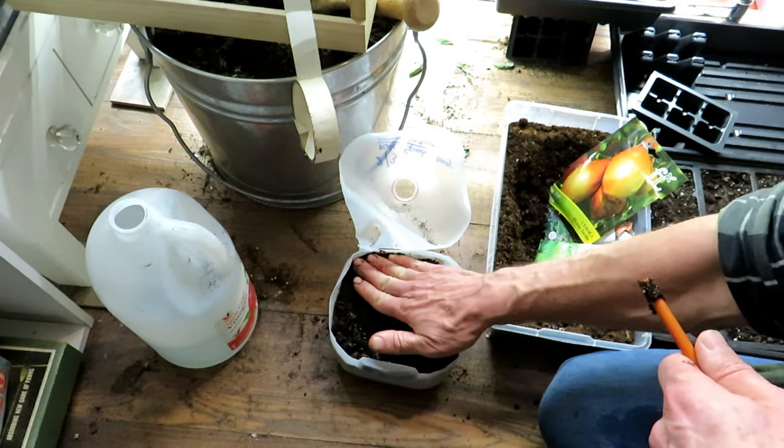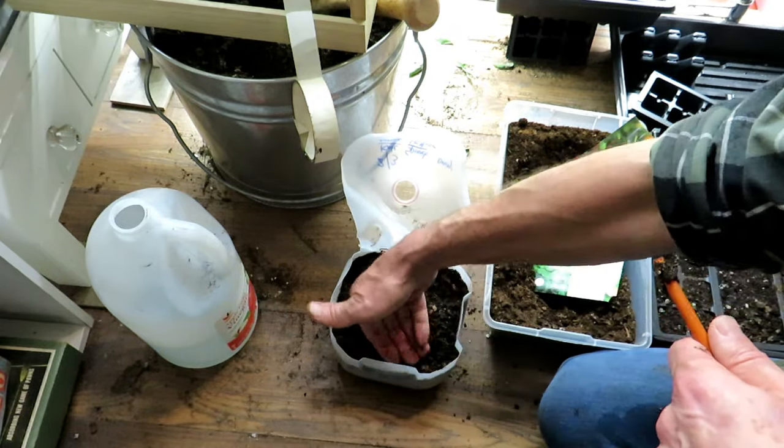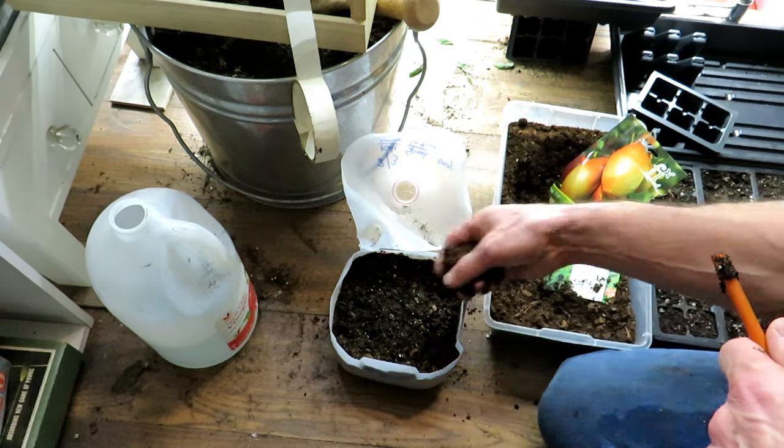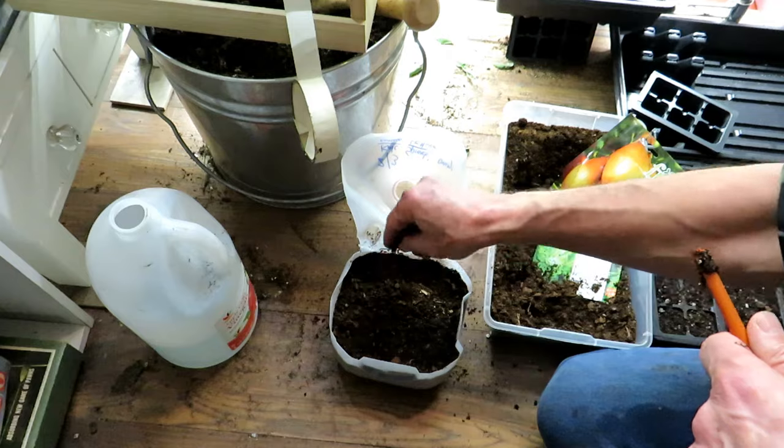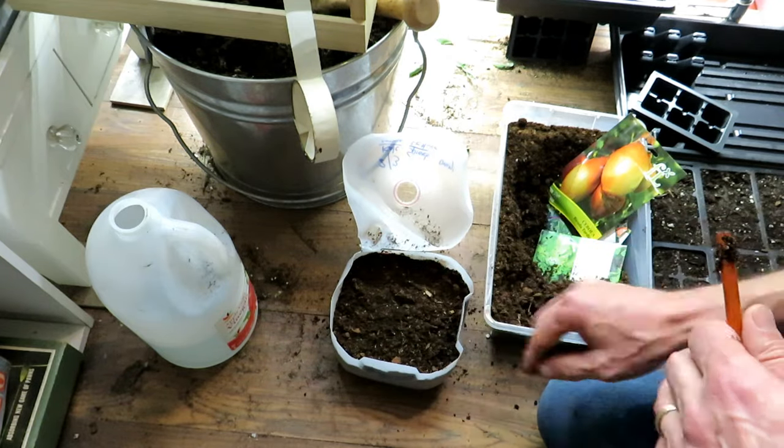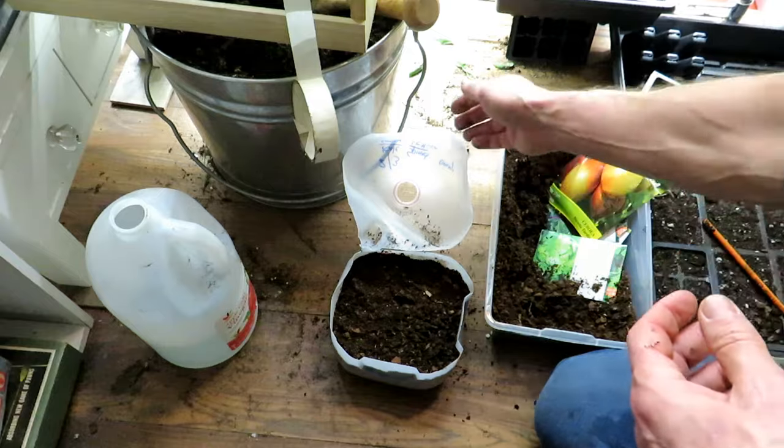So once the seeds are down, I'm just going to mix the onions into the top quarter inch. Same thing with the lettuce. Same thing with the kale. And remember, we did multiple seeds. Press everything in. If you want, you could sprinkle a little more of your mix, your potting mix, your starting mix across the top. And that sets them up for winter sowing.